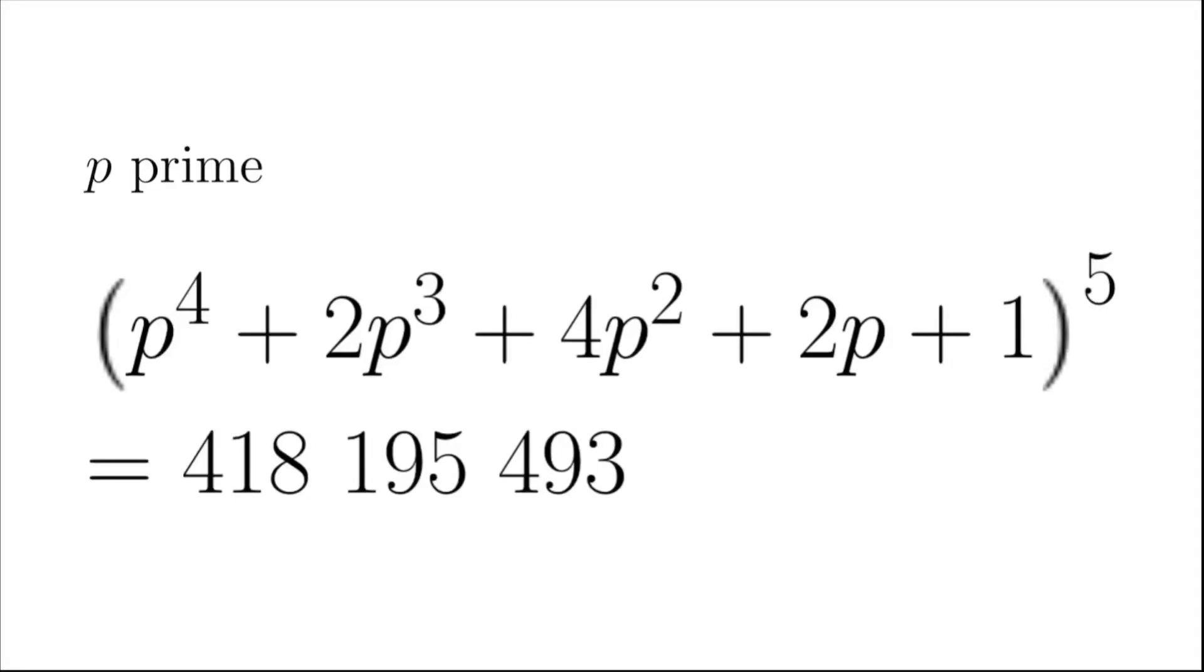In this video, we are going to find prime numbers p such that p to the power 4 plus 2p cubed plus 4p squared plus 2p plus 1, all to power 5, equals 418,195,493.